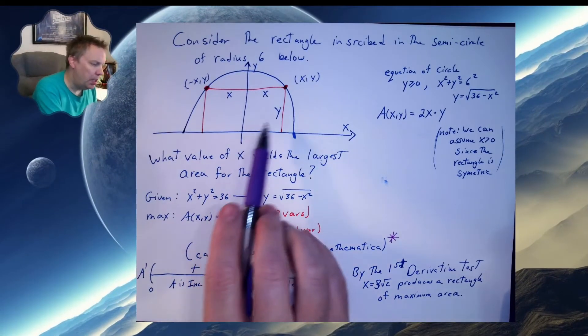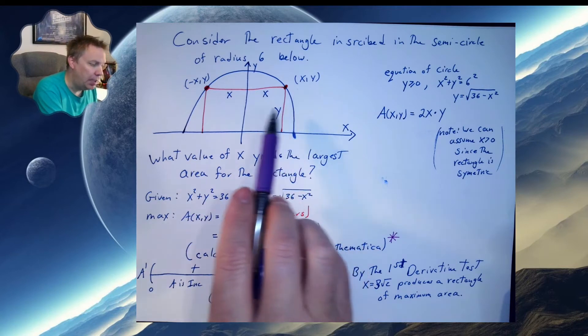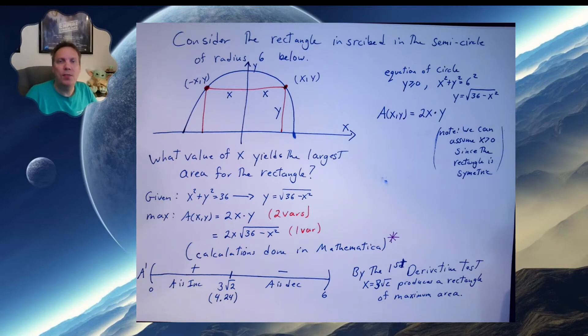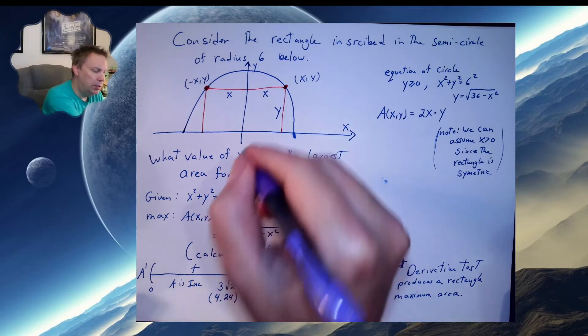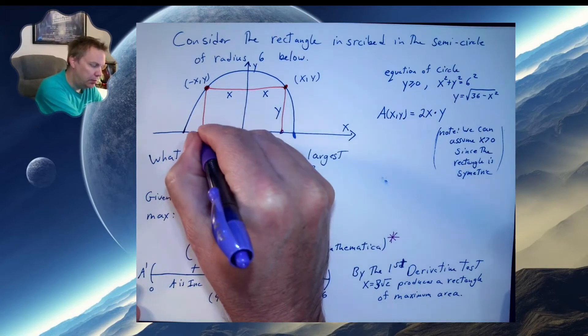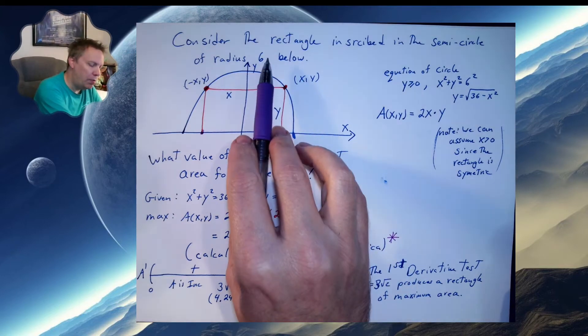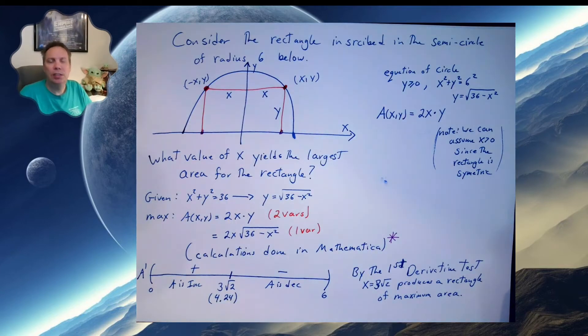So in this problem, I will have a circle and an inscribed rectangle. Two vertices of the rectangle are on the circle itself, and the other two vertices down here are on the x-axis. What's given in this problem? The radius of this circle is 6.